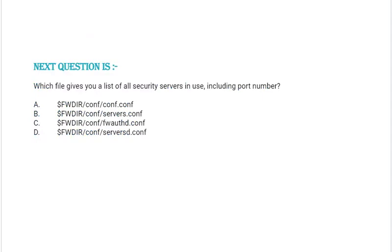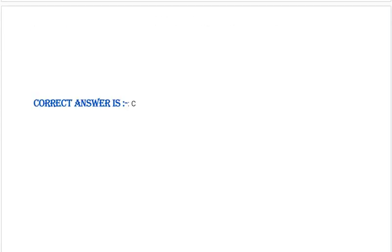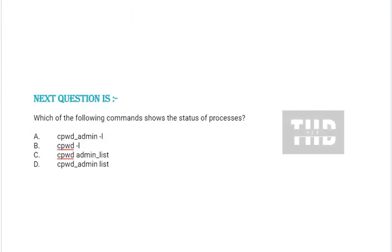Next question: Which file gives you a list of all security servers in use including port number? See the options — option A, B, C, and option D. Correct answer is option C.